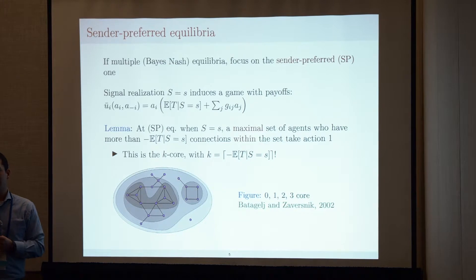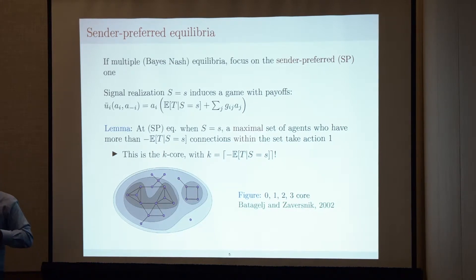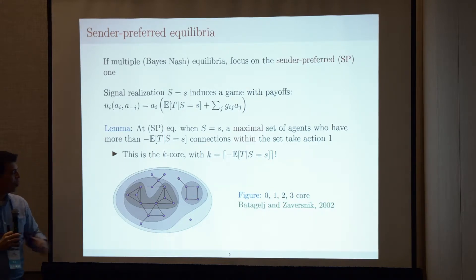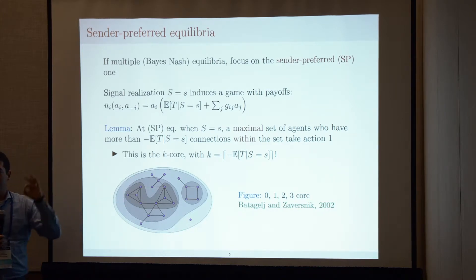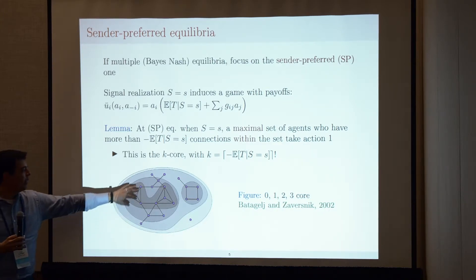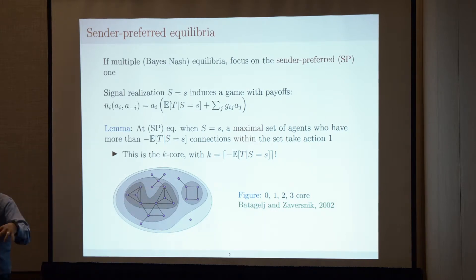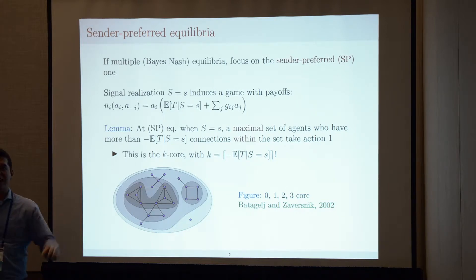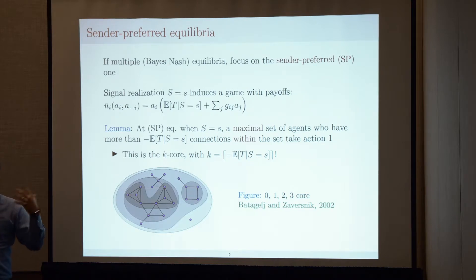This object is actually well-known from graph theory — it is exactly the k-core of the underlying network, where k is given by the negative conditional expectation. The zero core is the set of all nodes; the one core is obtained by removing all nodes with degree zero; the two core by removing nodes with degree one; the three core is the darkest region; and so on. The k-core is different from the set of agents who have degree greater than k — in a line network all nodes are in the one core but no node is in the two core — but it is not a difficult object to characterize.